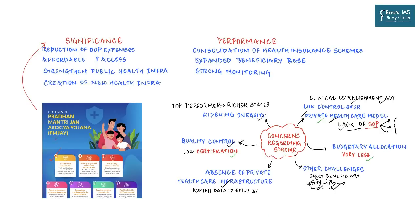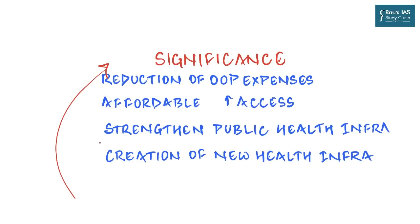The significance of PM-JAY includes a massive reduction of out-of-pocket expenditure. In 2018, Indians spent around 62.7% of their total health spending as out-of-pocket expenditure — meaning for every 100 rupees spent on health, 63 rupees came from the individual's pocket. While this may not be a serious problem for the middle or upper-middle class, it becomes a critical issue for people below the poverty line, where a single severe illness can plunge them back into poverty.